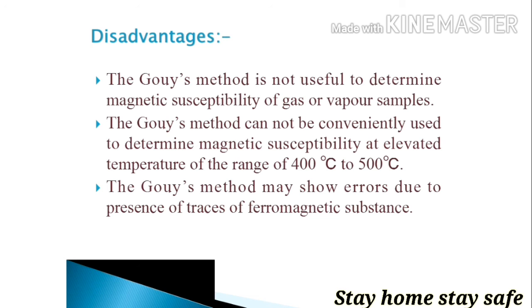Another disadvantage is the Gouy method cannot be conveniently used to determine magnetic susceptibility at elevated temperature of the range of 400 to 500 degrees centigrade due to convection currents.